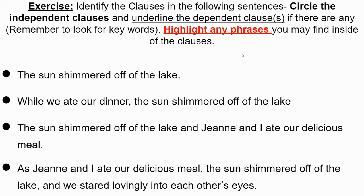'The sun shimmered off of the lake, and Jean and I ate our delicious dinner.' Now I have 'and' combining two independent clauses. 'The sun shimmered off of the lake' — and 'Jean and I ate our delicious dinner.' That's how you create a compound sentence with two independent clauses.